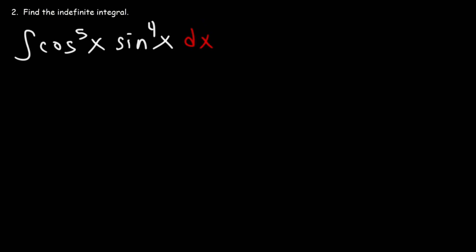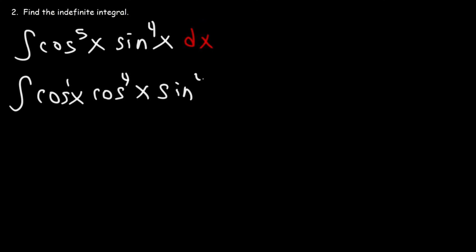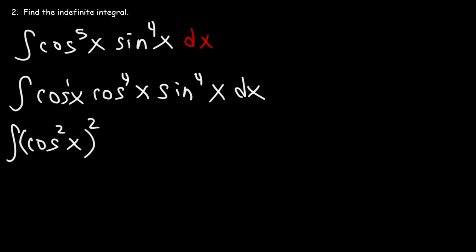Problem 2: find the indefinite integral of sine to the fourth power times cosine to the fifth power. This is a trigonometric integral, and we'll use u substitution. First, we rewrite cosine to the fifth as cosine x times cosine to the fourth power, since 1 plus 4 equals 5. Then cosine to the fourth is written as cosine squared x, all squared, since 2 times 2 is 4. We move cosine x toward the end.